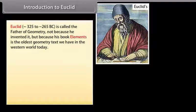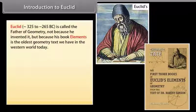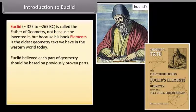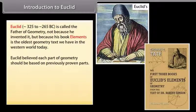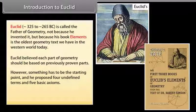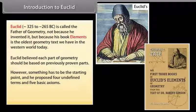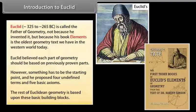Introduction to Euclid. Euclid, from approximately 325 to 265 BC, is called the father of geometry, not because he invented it, but because his book Elements is the oldest geometry text we have in the Western world today. Euclid believed each part of geometry should be based on previously proven parts. However, something has to be the starting point, and he proposed four undefined terms and five basic axioms. The rest of Euclidean geometry is based upon these basic building blocks.